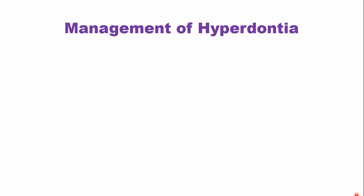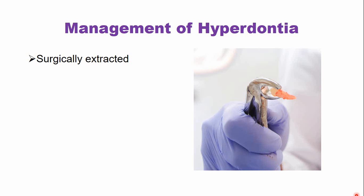The usual management of hyperdontia is surgical extraction of the supernumerary tooth. The teeth are surgically extracted as most of the time they interfere with the normal tooth position. Sometimes the supernumerary teeth are unerupted, and in that case cysts — for example, dentigerous cysts — can develop. Sometimes the supernumerary tooth causes resorption of the adjacent permanent teeth.